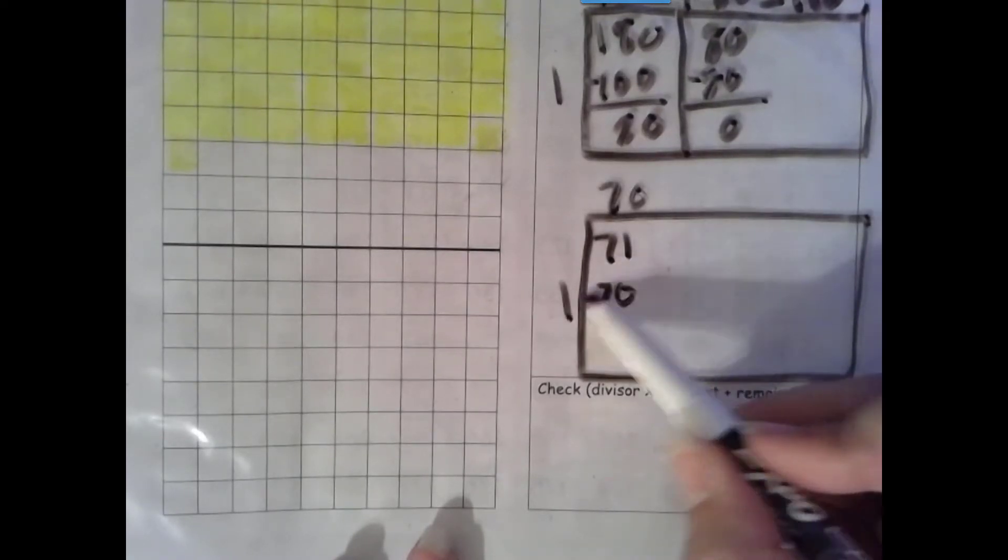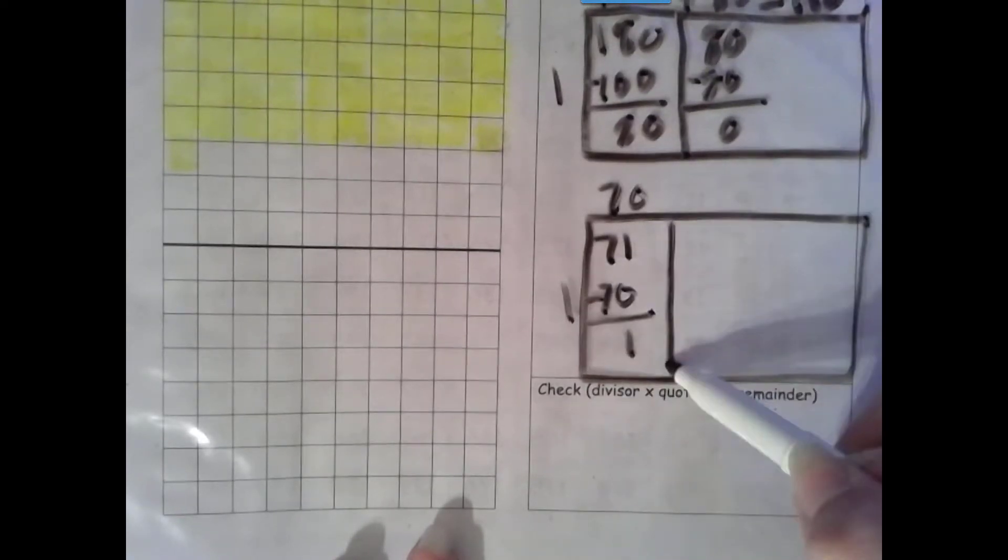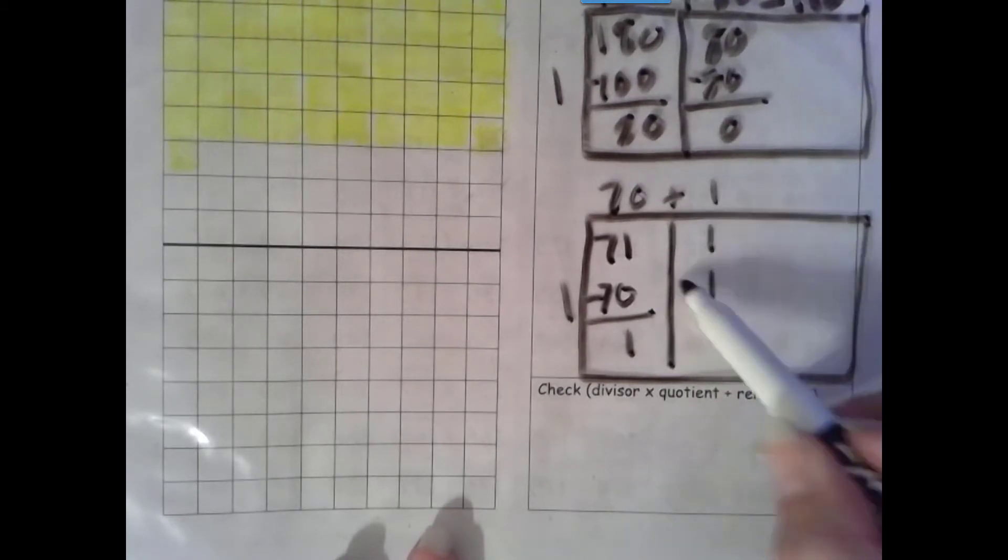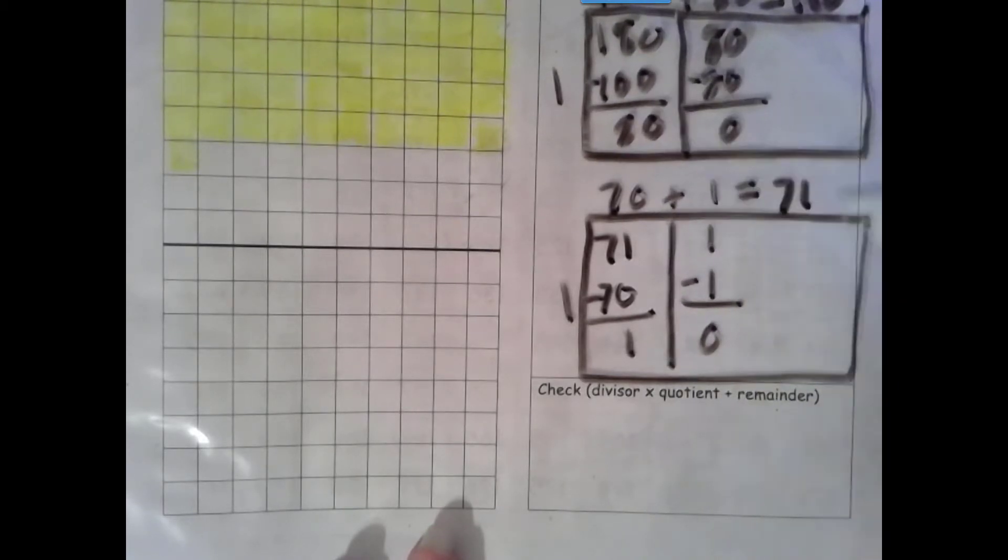Times 1 is 70. More on top, no need to stop. Number is the same, 0 is the game. And then 1 times 1 is 1. Number is the same, 0 is the game. Add our partial quotients, we get 71.